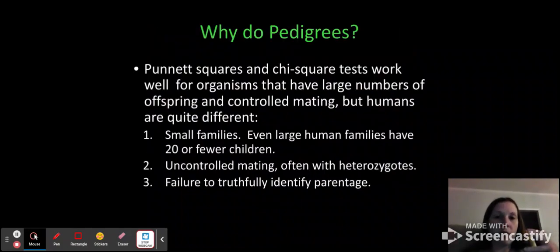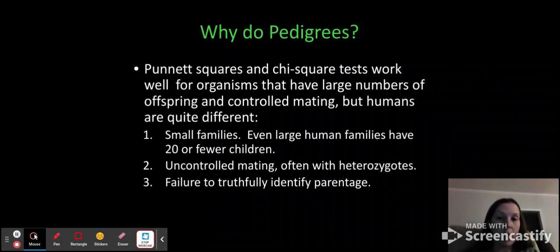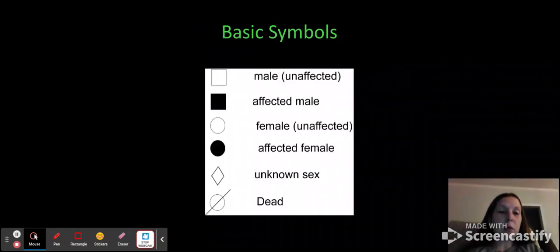So Punnett squares work well for organisms that have large numbers of offspring and controlled mating, but humans are quite different. We have small families, even large human families have 20 or fewer children. Uncontrolled mating, so they're often heterozygotes because we aren't kept in a box until we have to mate with one person, we get to pick our mate. And there's failure to truthfully identify your parentage sometimes. Sometimes people don't know their parents, so you can't use a Punnett square if you don't know the genetic makeup of the parents. So that's why we use pedigrees for human family tree relationships.